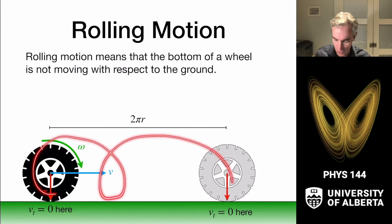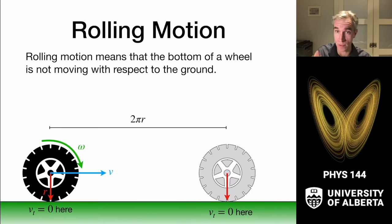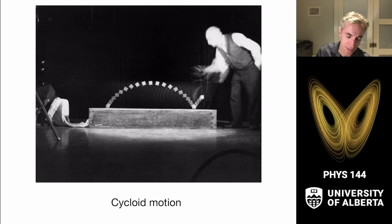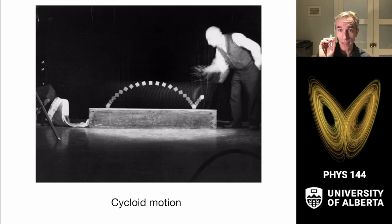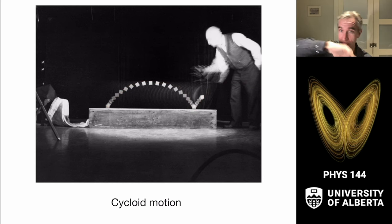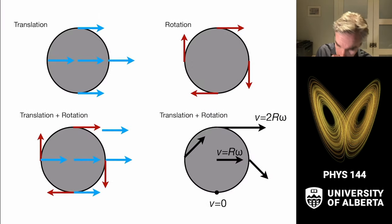As the wheel rolls, the contact point always has zero tangential velocity relative to the earth. This leads to peculiar motion: a point on the rim traces out a cycloid — seen in stop-motion photography of a rolling object with a card attached to its edge. The point comes down, touches the ground, then moves fast over the top, with spacing that decreases near the ground. That's a cycloid.